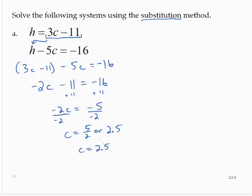Now that we have a value for c, let's substitute back and solve for h. h equals 3c minus 11. So that would be 3 times 2.5 minus 11.